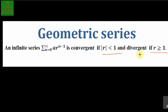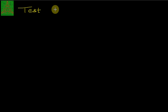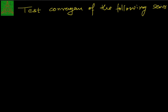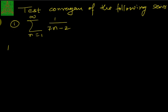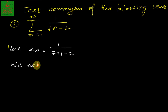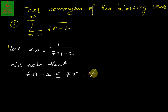The statement for each example is: test the convergence of the following series. The first example is summation from n=1 to infinity of 1/(7n − 2). This can be solved by two methods: one with the comparison test and another with the limit comparison test. Here u_n = 1/(7n − 2). Note that 7n − 2 ≤ 7n for any n ≥ 1, since we are subtracting two.